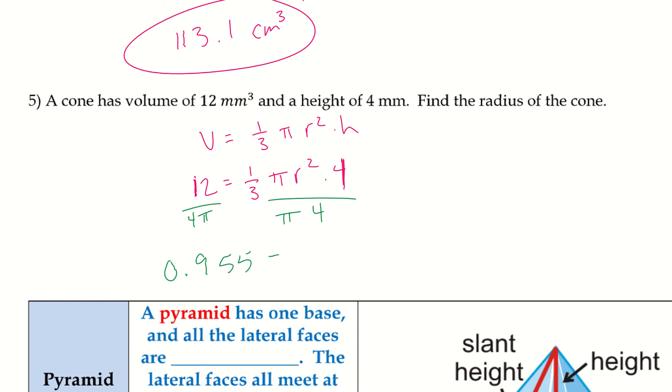And that's going to give me 0.955. The decimal does go on a little bit further, but I'm just going to leave it there. And then, I have one-third r squared. Let's go ahead and multiply by the 3. And so, I'm going to end up with 2.865 equals r squared. And then, in order to get rid of the square, you want to go ahead and take the square root.